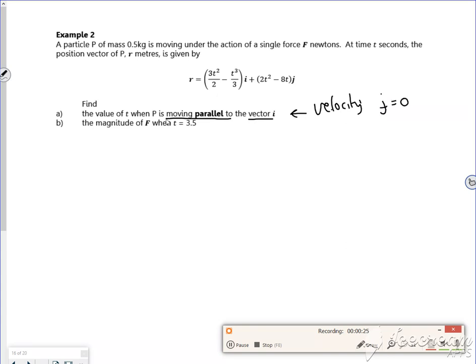Right so I need the velocity first. So we all know that the velocity is dr by dt. I don't like having it in the i and j notation, I'm sure I've said that to you a million times. 3t squared over 2 minus t cubed over 3 in the i direction, 2t squared minus 8t in the j direction. Right so leave my velocity vector first.